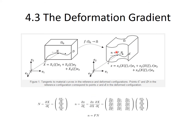In a different deformed configuration, the new tangent denoted by small n is equal to the derivative of the new position function small x with respect to xi. The two tangents small n and capital N are related by the deformation gradient, which provides the partial derivatives of the components of small x with respect to the components of capital X. Small n is equal to the deformation gradient F multiplied by capital N.